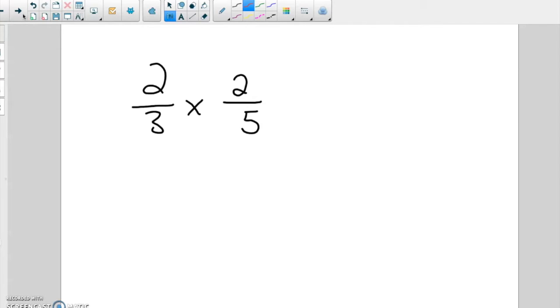So on this one, you multiply straight across. Two times two is four. Three times five is fifteen. Can you simplify that? Nope. So what goes into four? Two and four, and two and four does not go into fifteen. So your answer is four fifteenths.